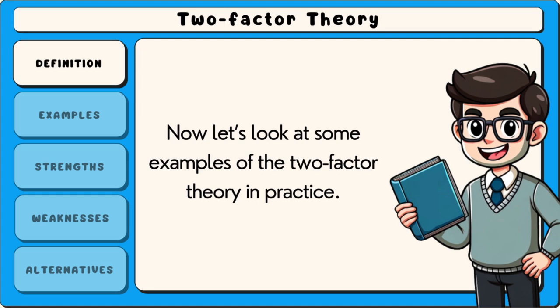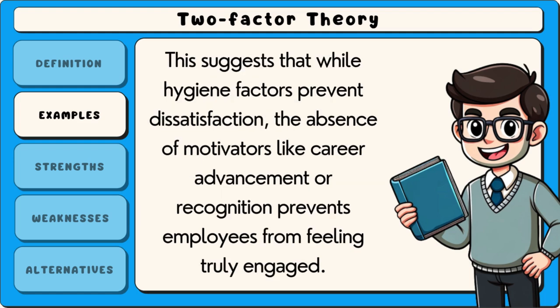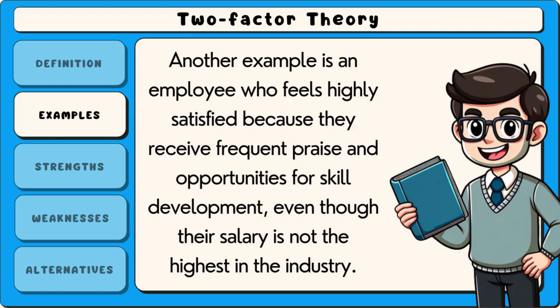Now let's look at some examples of the two-factor theory in practice. One example is a company that provides competitive salaries and safe working conditions but notices that employees are still unmotivated. This suggests that while hygiene factors prevent dissatisfaction, the absence of motivators like career advancement or recognition prevents employees from feeling truly engaged.